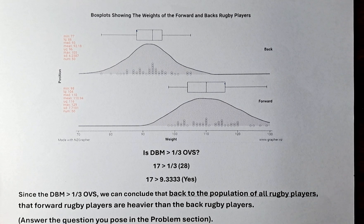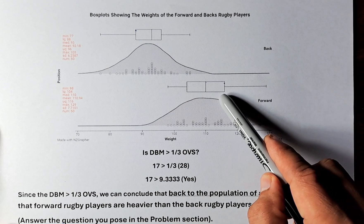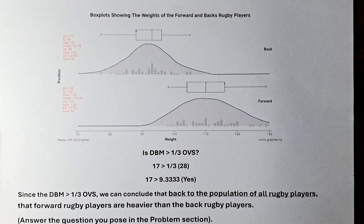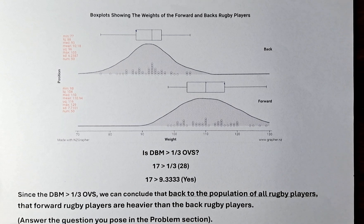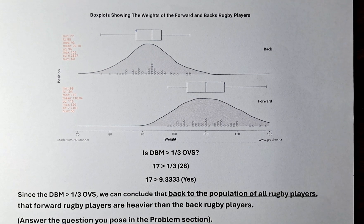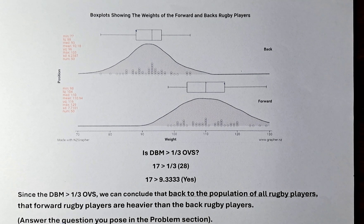If the answer is yes, then you can claim that the forward weight is heavier than the back. If the answer was less than or equal to, then we cannot make the claim that forward weights are heavier than the back weight. Since the DBM is greater than one third of the OVS, we can conclude that, back to the population of all rugby players — remember the word 'all rugby players', you must go back to the population — we can claim that forward rugby players are heavier than the back rugby players.